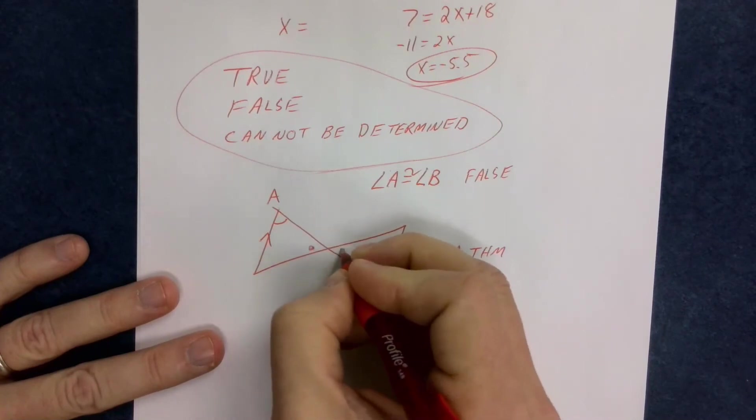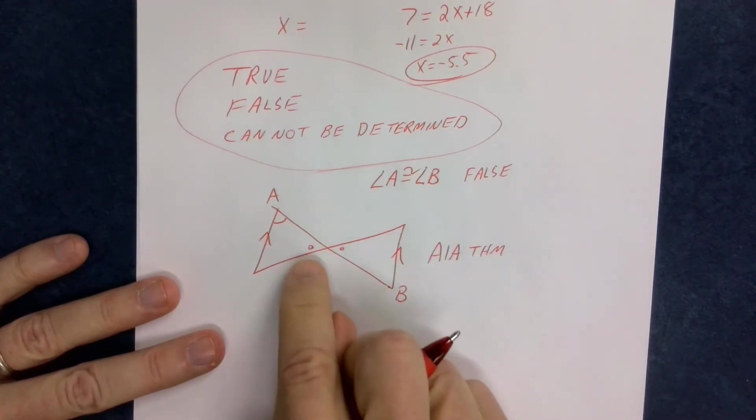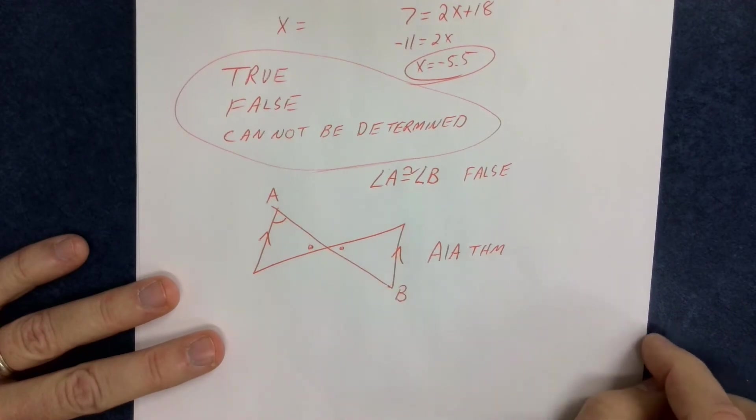If I said, well, wait, what about these two angles? Why are those two angles congruent? And you would say, hey, that's because of the vertical angles theorem, right?